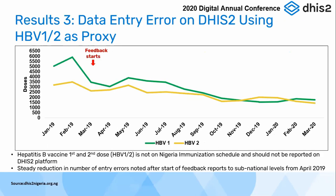We also had data entry error proxies. In Nigeria, HBV1 and HBV2 vaccines are not on our schedules — hepatitis vaccine is given through the Penta — so we're not expecting to see HBV1 and HBV2 administered on DHIS2. However, we noticed that some states and health facilities were actually inputting this data. So we needed to start giving feedback to the states. Starting from baseline in February and providing feedback from March, we could see a decline in the reporting of HBV1 and HBV2, though we're not yet where we expect to be — we expect to see zeros.